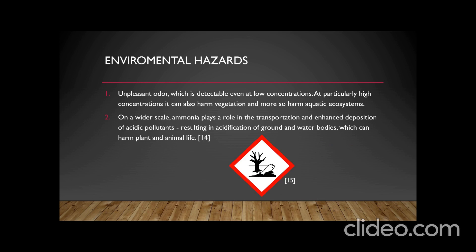Moving on to environmental hazards posed by our project, we discuss concerns when collecting ammonia from the waste stream after recycling ethanol. The main local problem of ammonia released into air is its unpleasant odor, detectable even at low concentrations, and at high concentrations it can harm vegetation. The harm caused by ammonia in water bodies is more serious because it is very toxic to aquatic organisms. On a wider scale, ammonia plays a role in transporting and depositing acidic pollutants, resulting in acidification of ground and water bodies which can harm plant and animal life.